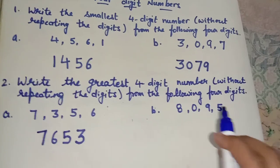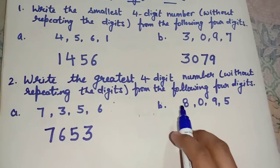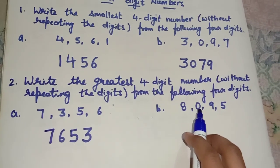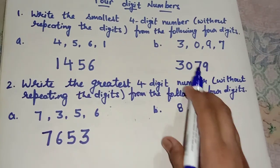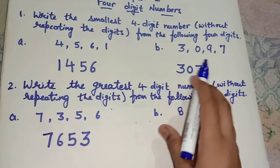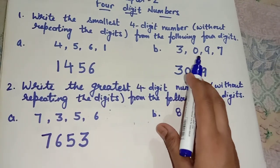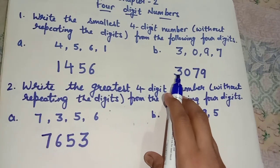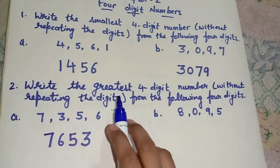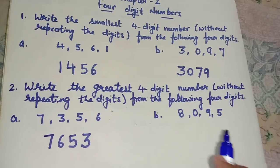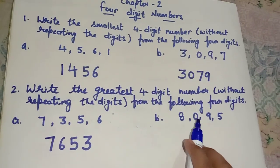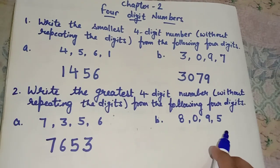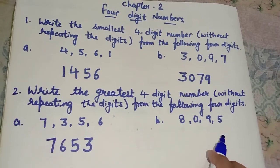We will do the same for this question: 8, 0, 9, 5. Students, again we have been given a 0 in this number. What was the condition for this? When we have a 0 given in the digits and we make the greatest 4-digit number, we will place 0 at the end. So we will write 0 in the end.